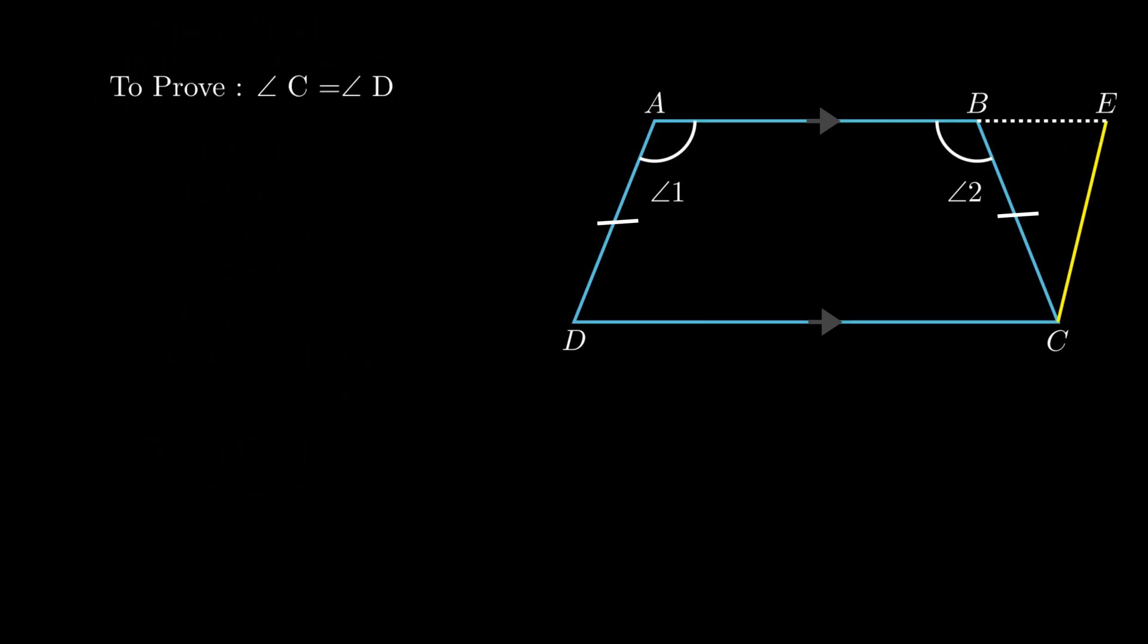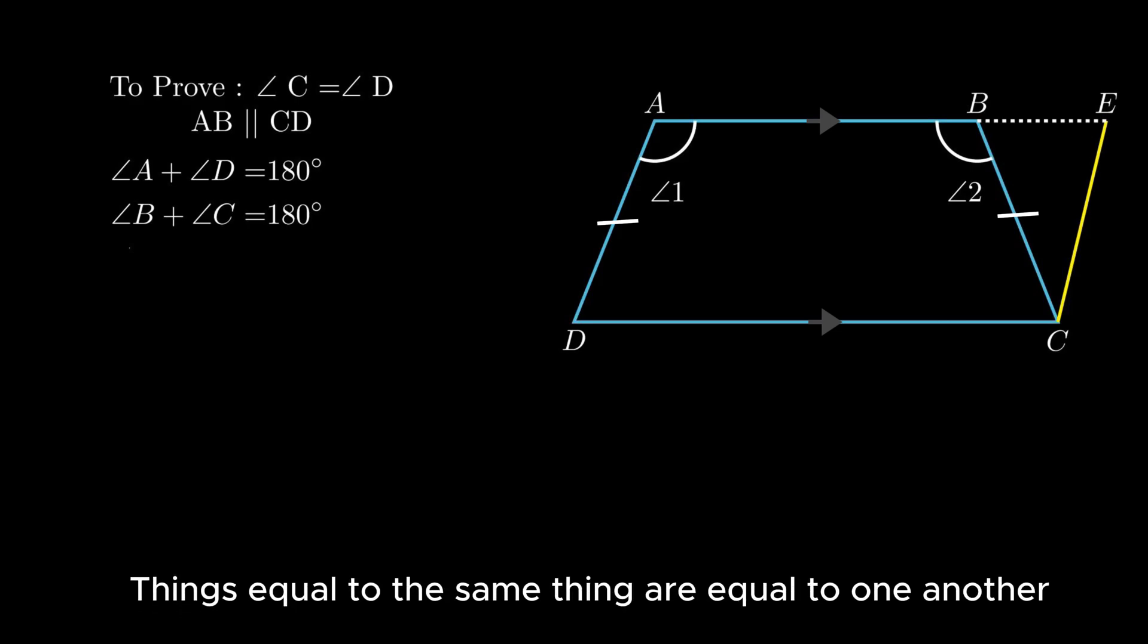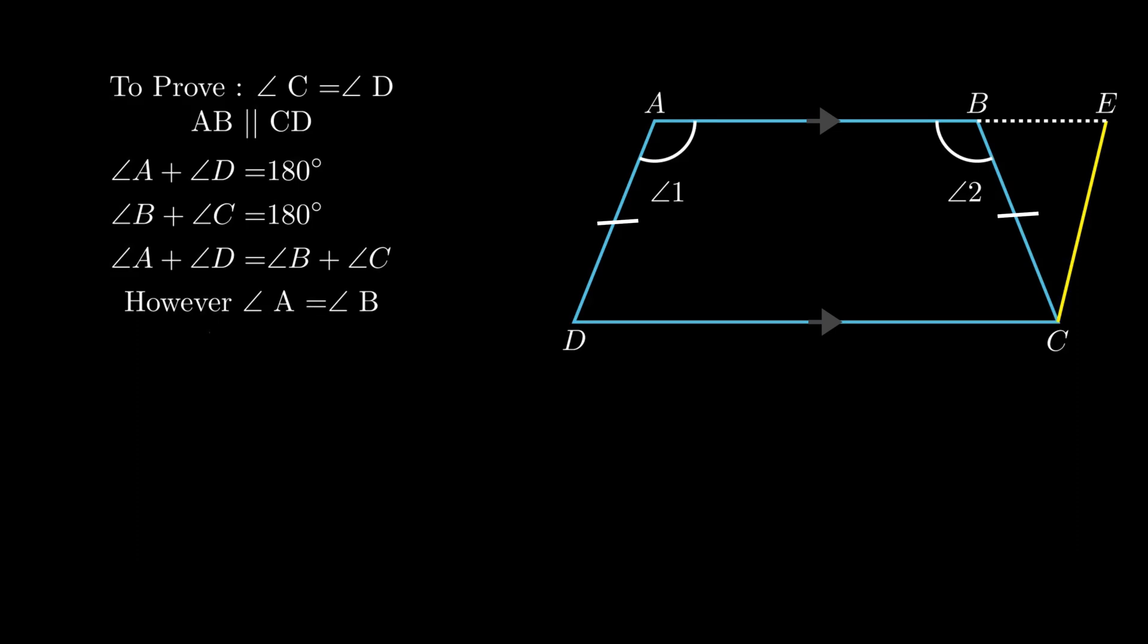Consider parallel lines AB and CD. As the sum of co-interior angles are supplementary, the sum of angle A and angle D equals 180 degrees, and the sum of angle B and C equals 180 degrees. Using the axiom that things equal to the same thing are equal to one another, we conclude angle A plus angle D equals angle B plus angle C. However, angle A equals angle B. Therefore, by cancellation law, angle D equals angle C.